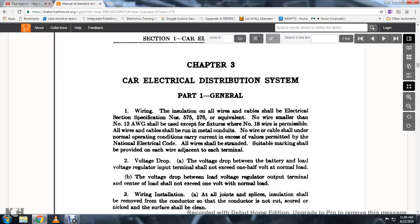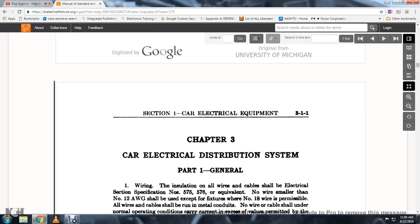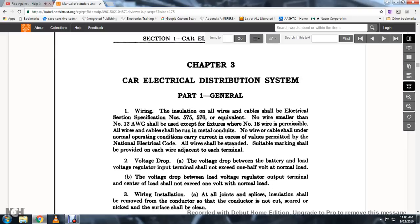Section 1, Chapter AAR Electrical Division, Electrical Manual 1966. Section 1, Car Electrical Equipment 3111, Chapter 3, Car Electrical Distribution System, Part 1 General.